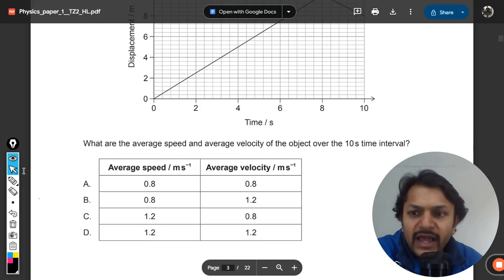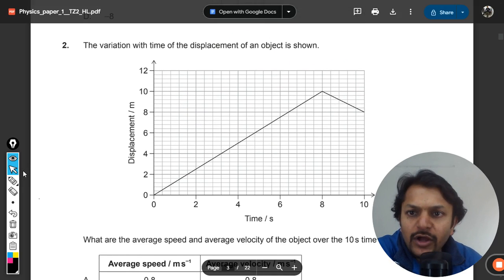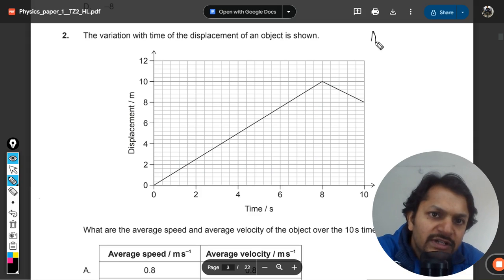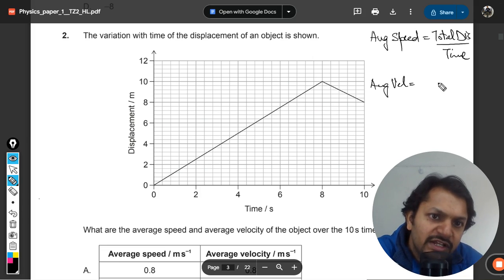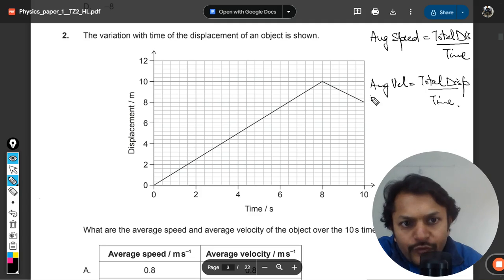You have to find the average speed and average velocity. The only concept used here is that average speed equals total distance divided by total time, and average velocity equals total displacement divided by total time.